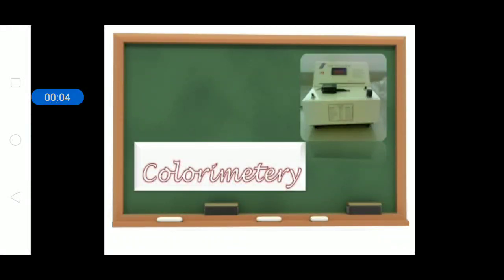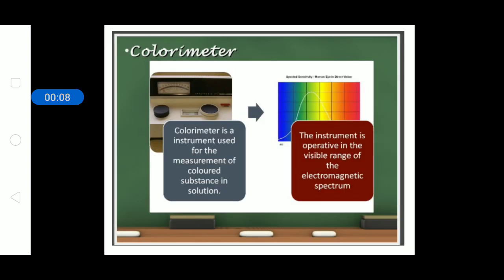Today we will discuss colorimetry. A colorimeter is an instrument used for the measurement of color substance in a solution, and the process or principle on which this is achieved is termed colorimetry.